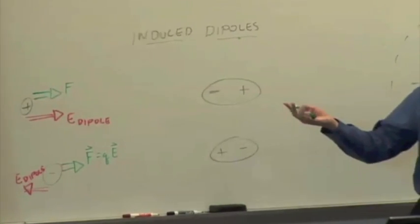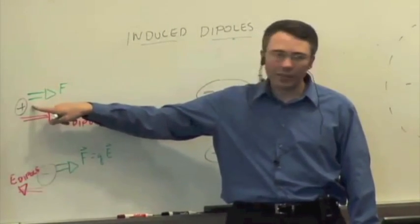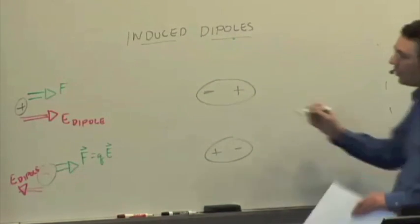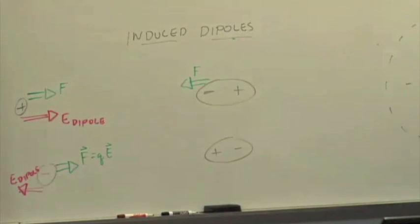And then just from Newton's third law, if you have the force due to the dipole on the charge pointing in that direction, then the force on the charge due to the dipole would have to be equal in magnitude and in the opposite direction, right? So we get an attraction.